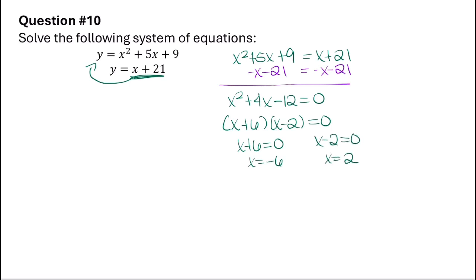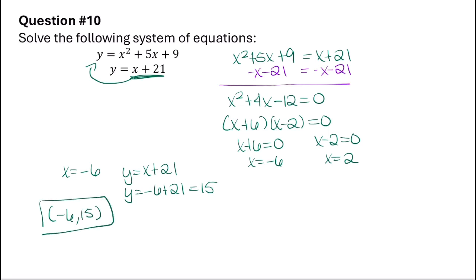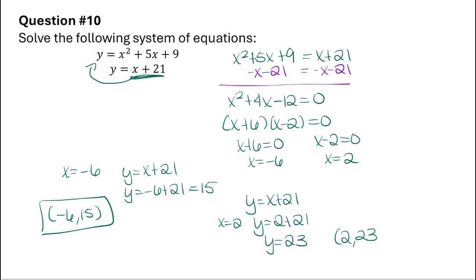To find the values of y I'll use the linear equation y equals x plus 21. When x equals negative 6, y equals negative 6 plus 21 which equals 15, so the first solution is at negative 6, 15. When x equals 2, y equals 2 plus 21 which equals 23, so the second solution is at 2, 23. Both of these points are solutions to the system, which you can also find by graphing.